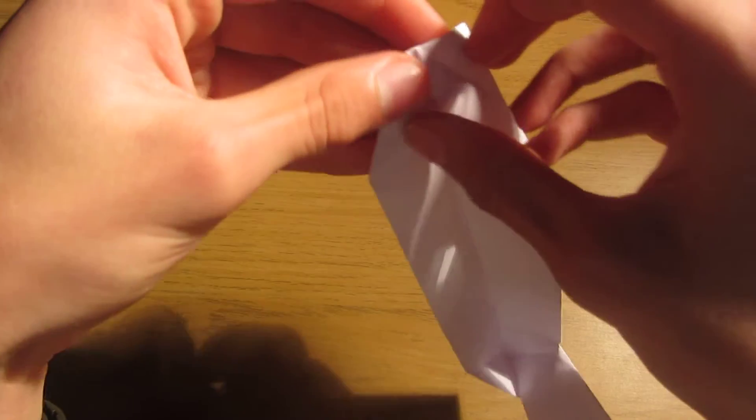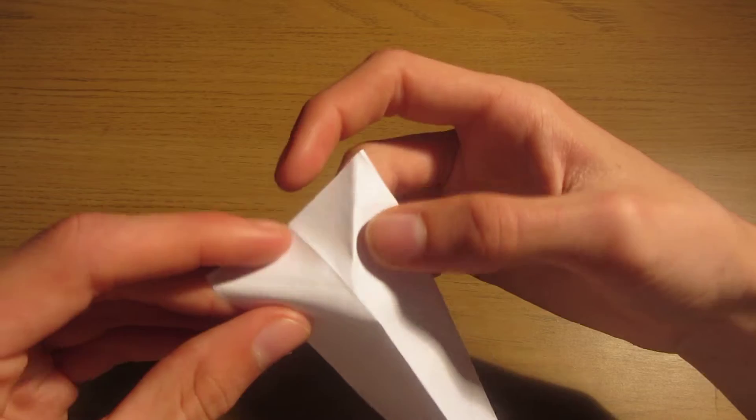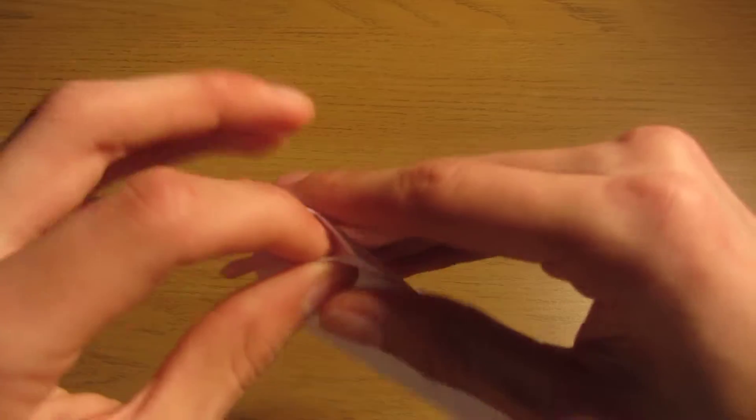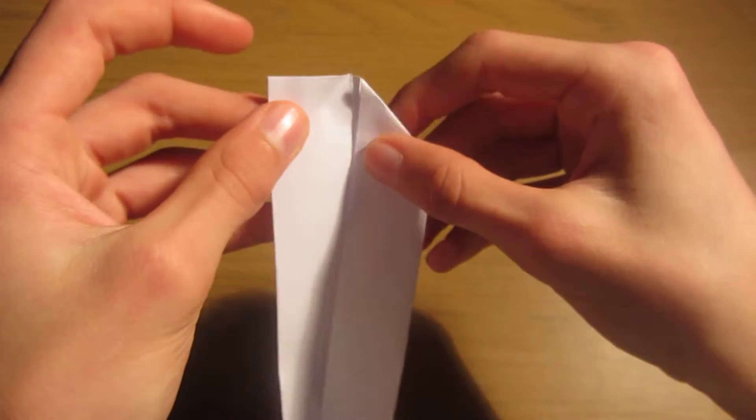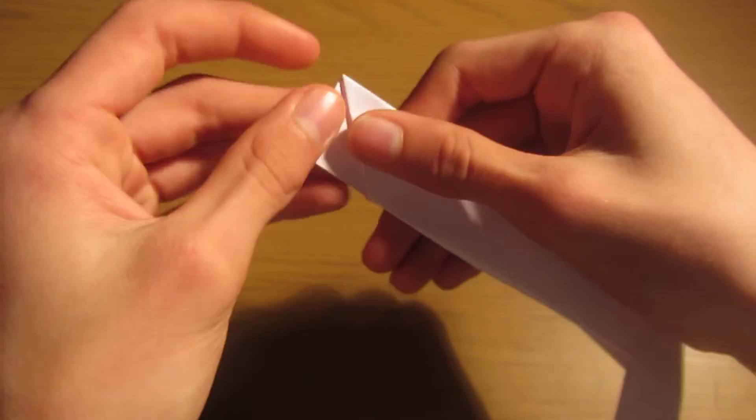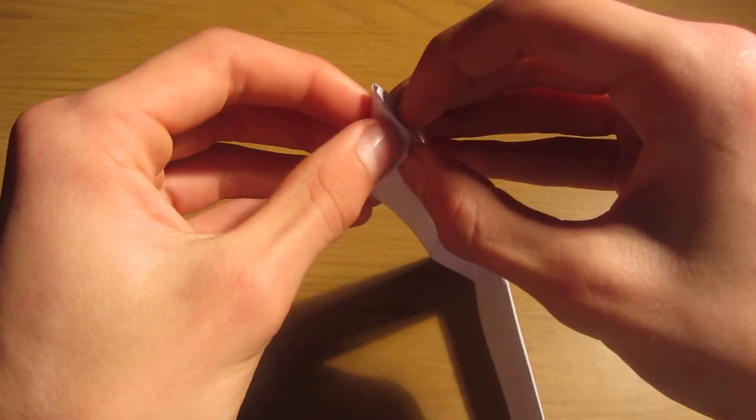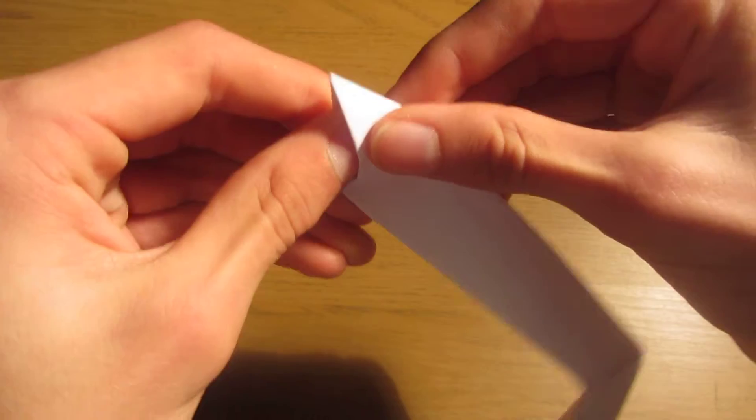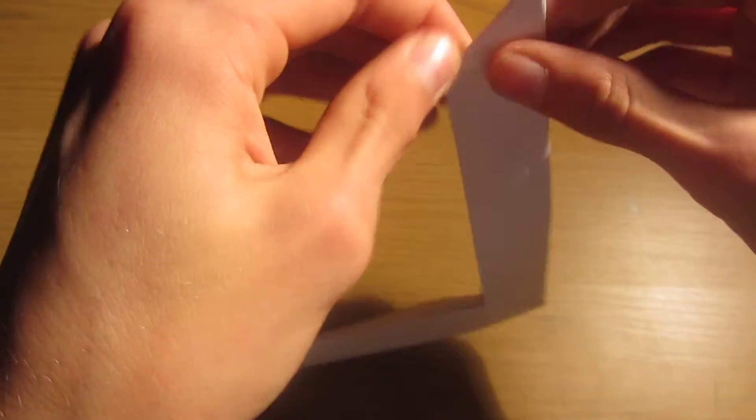Unfold this triangle. And then inside reverse fold like we did earlier. So we're going to fold it along both these lines. And then close it. Okay, now unfold this triangle. And then close it like this. Then we're going to fold this flap into this gap here. Like that. And then crease.